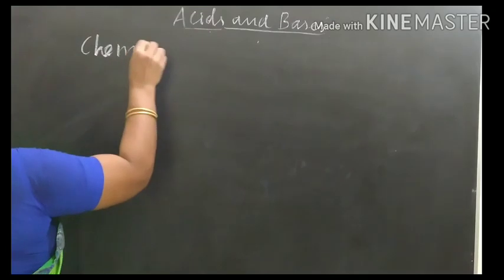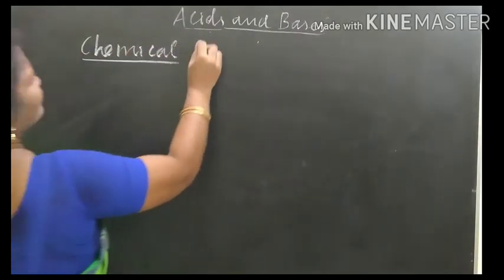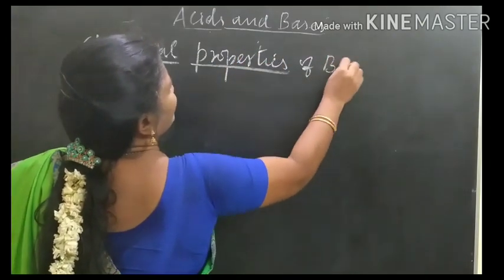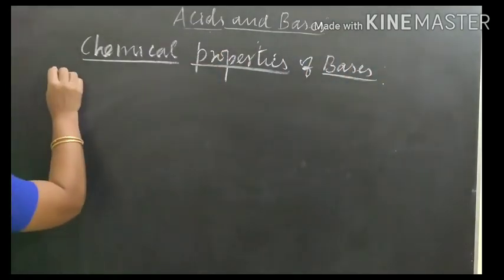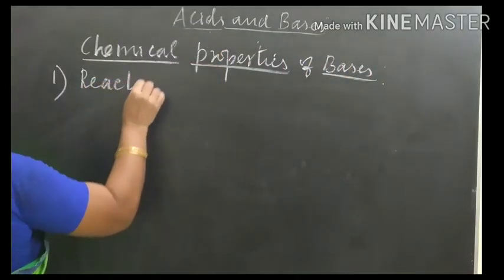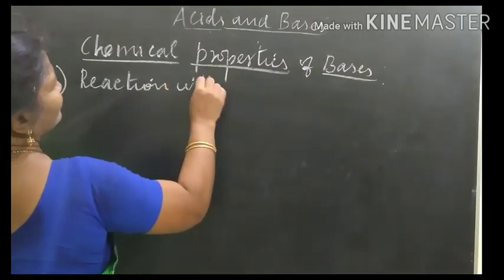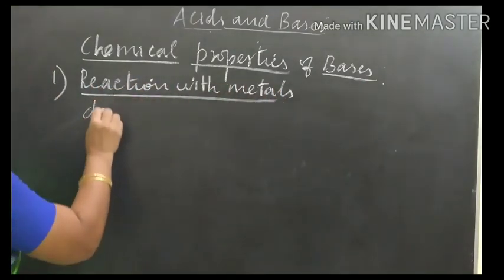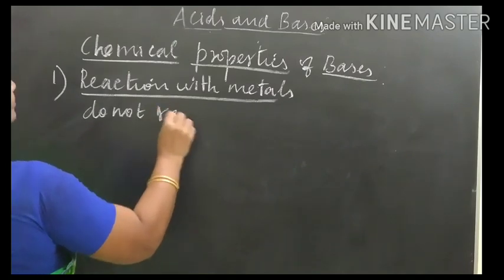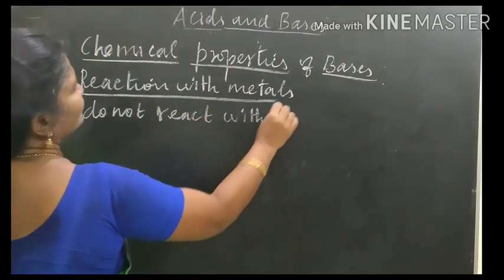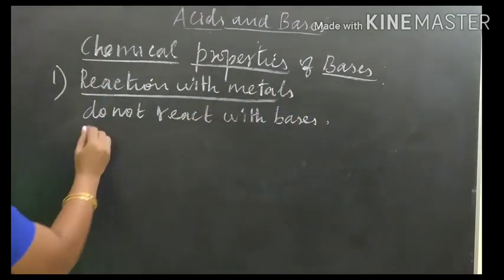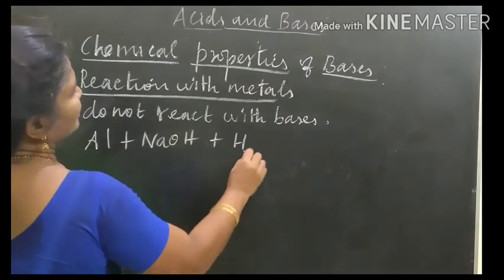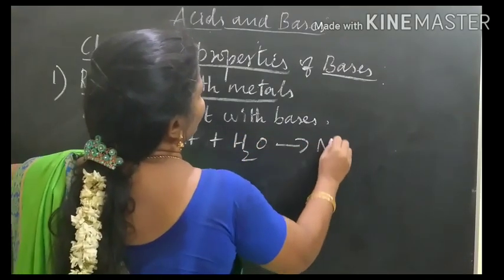Now we pass on to chemical properties of bases. First point: reaction with metals. Generally, metals do not react with bases. But aluminium reacts with sodium hydroxide and water to form sodium aluminate and hydrogen gas.